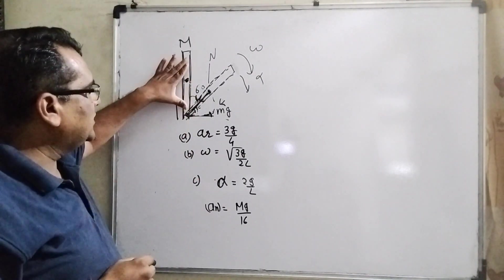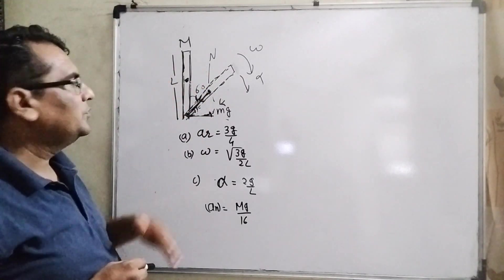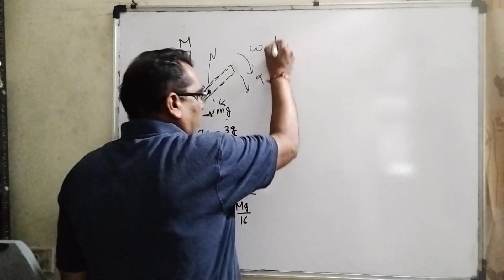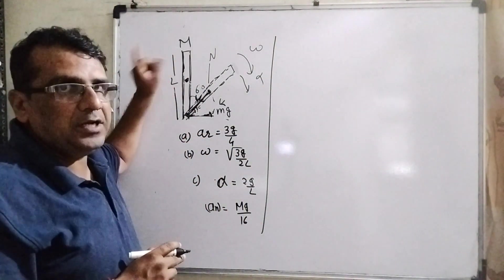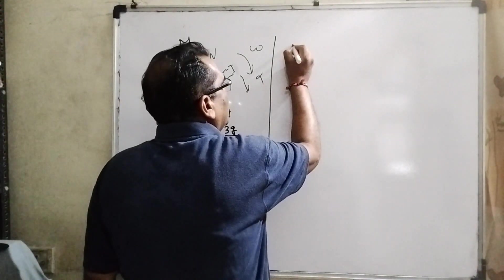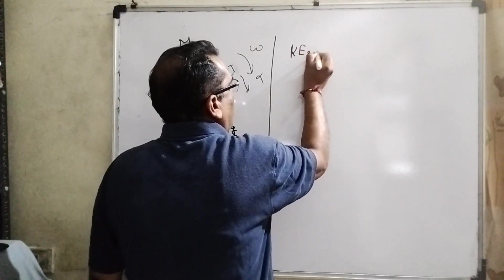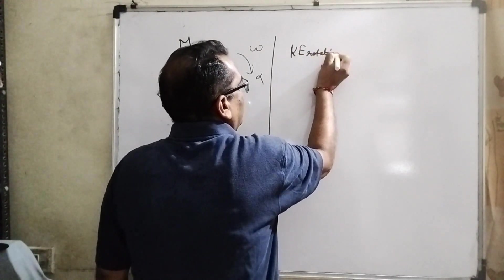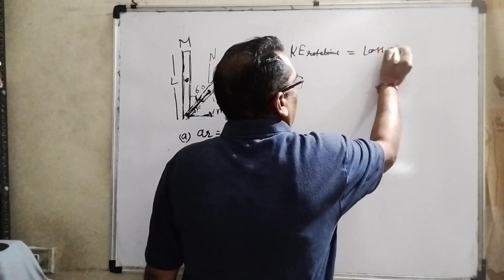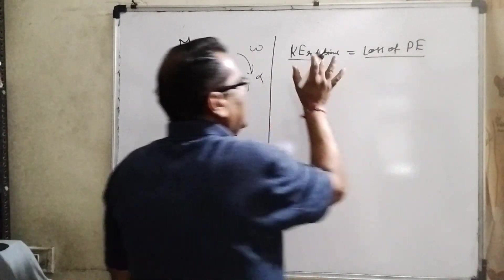Then first thing, you can see that the loss of potential energy converts into kinetic energy, rotational kinetic energy. So here we can take this as the basic concept, the central point of this question. So now we have to apply rotational kinetic energy equals loss of potential energy. This is the basic idea.